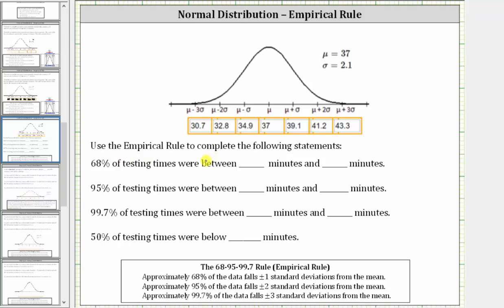We're asked to use the empirical rule to complete the following statements. 68% of the testing times were between what times? The empirical rule tells us approximately 68% of the data falls plus or minus one standard deviation from the mean,